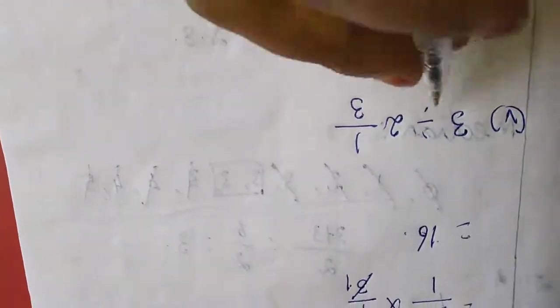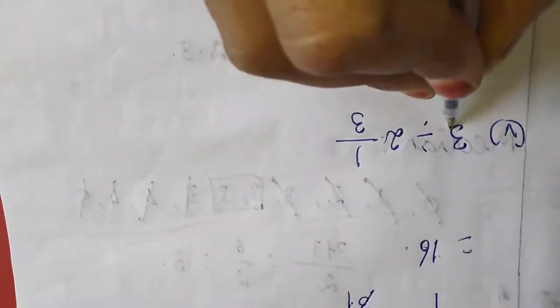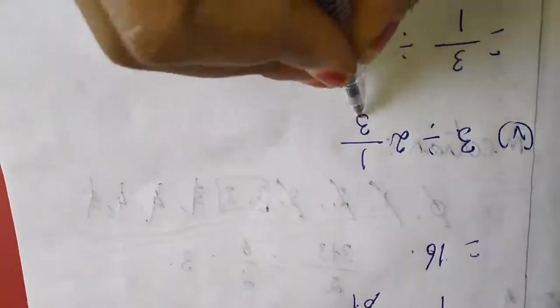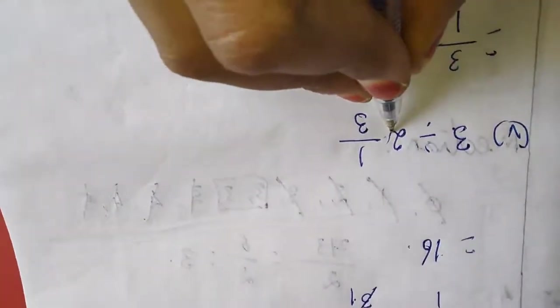This is also the same. See here: I am changing 3 as a fraction, that is 3/1. Next, the mixed number 2 and 1/3: 2 times 3 is 6, plus 1 is 7, so 7/3. Now 3/1 — I am going to change the symbol and change the fraction to its reciprocal, that is 3/7. Now multiplying: 9/7. This is the answer for the fifth sum.